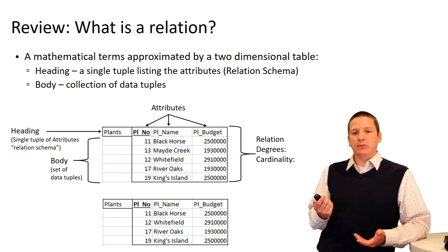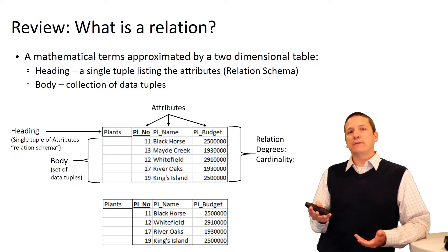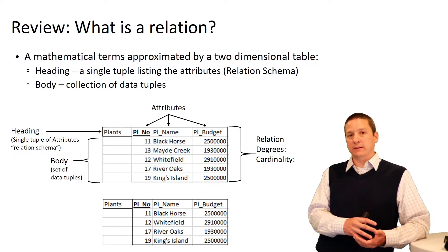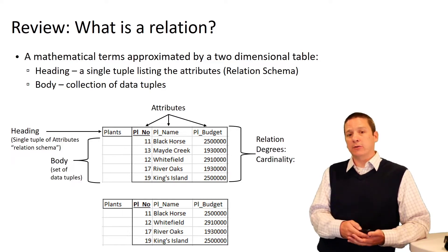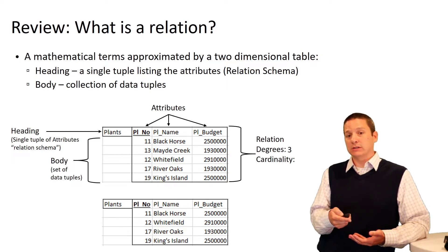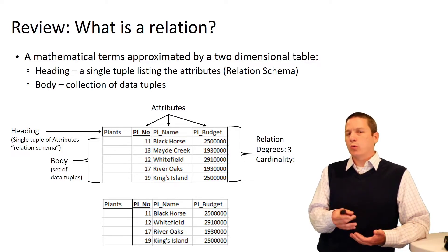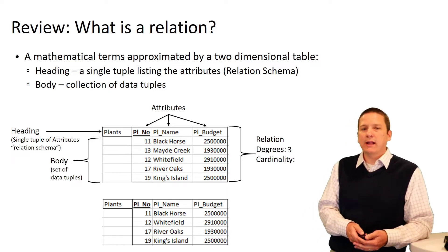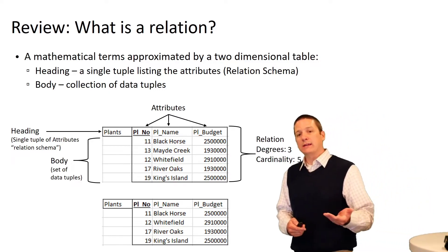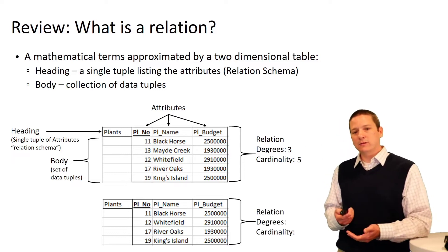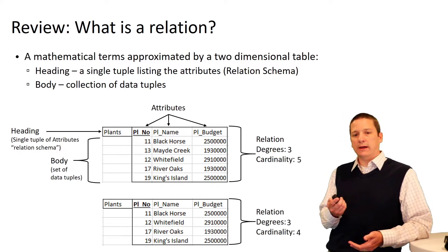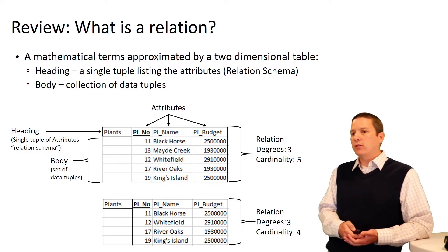Attributes make up the columns. We also updated our definitions of degree and cardinality. Whereas previously the degree of a relation meant the number of entities participating in it, we now say the degree of a relation is the number of attributes in that relation — in this case, three, because we have three attributes. Cardinality, previously described as one or many, can now more specifically be defined as the number of tuples in the relation — in this case, five. In another relation, we have a degree of three and a cardinality of four.